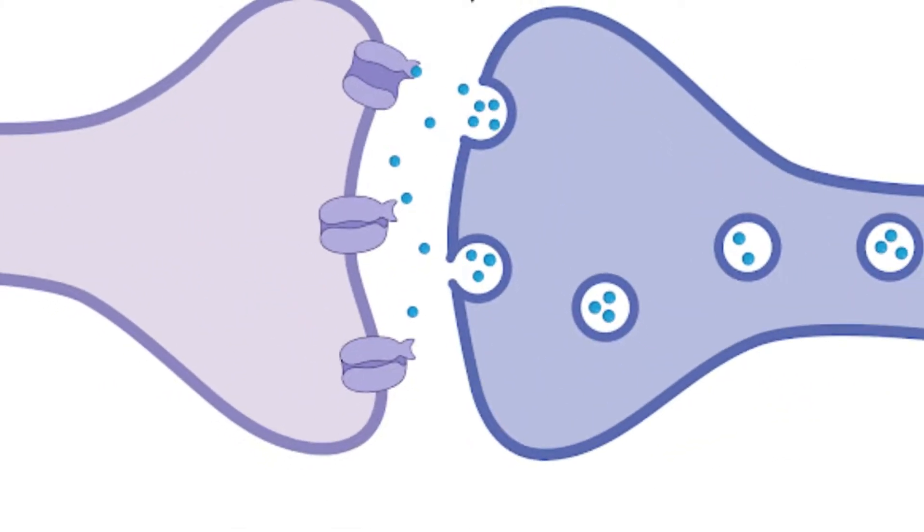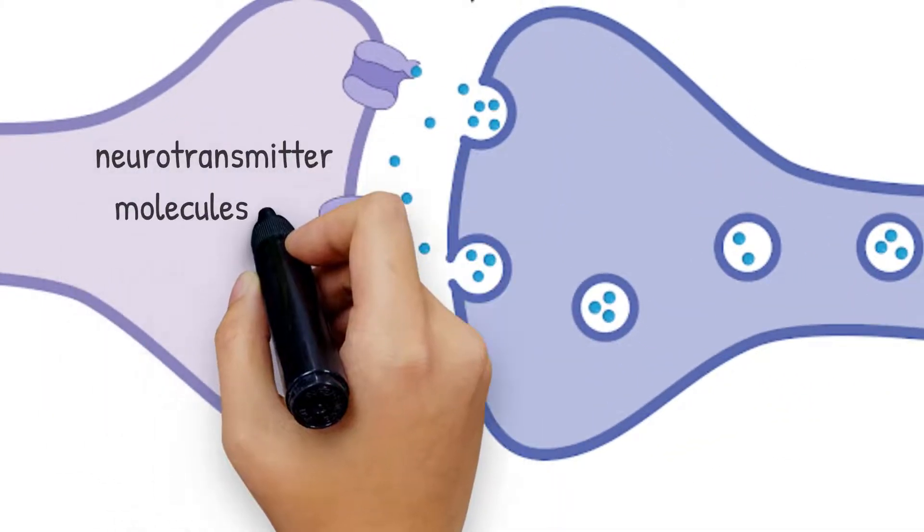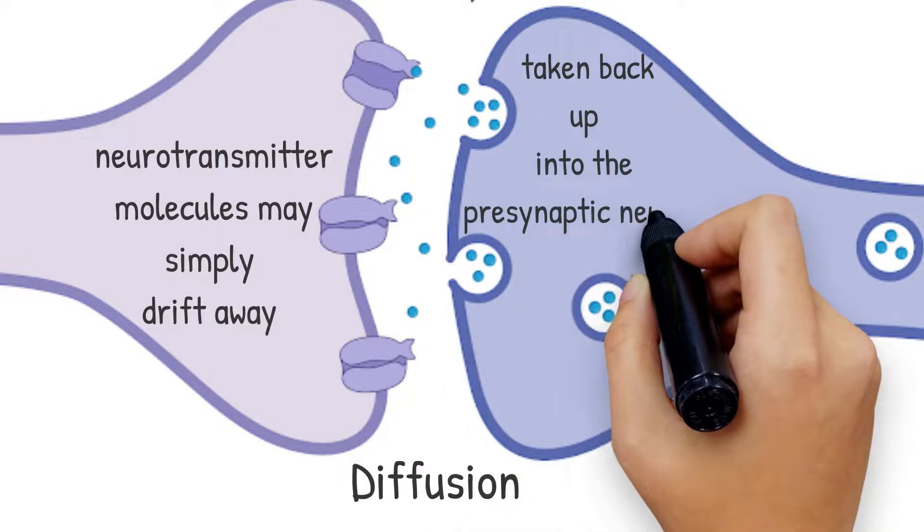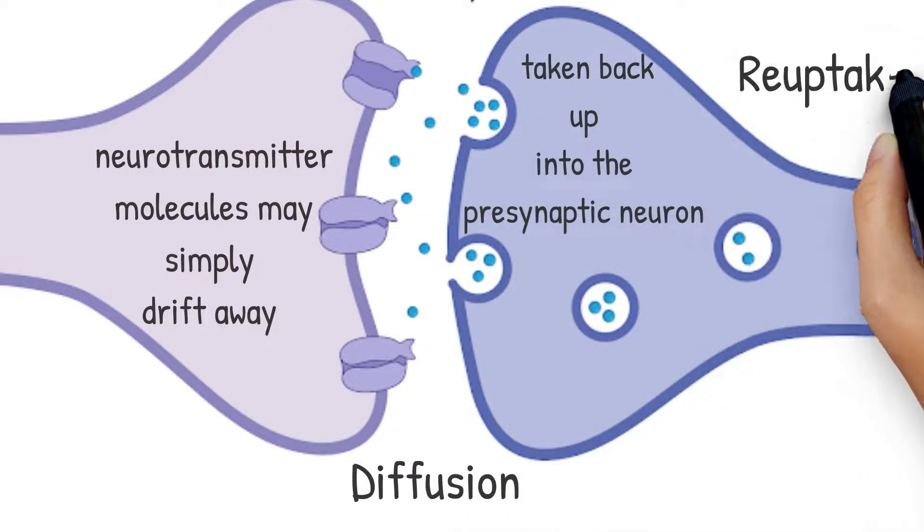To clear the synaptic cleft after this, the neurotransmitter molecules may simply drift away in a process known as diffusion. In some cases, they may be taken back up into the pre-synaptic neuron in a process called reuptake, to be reused, recycled or broken down.